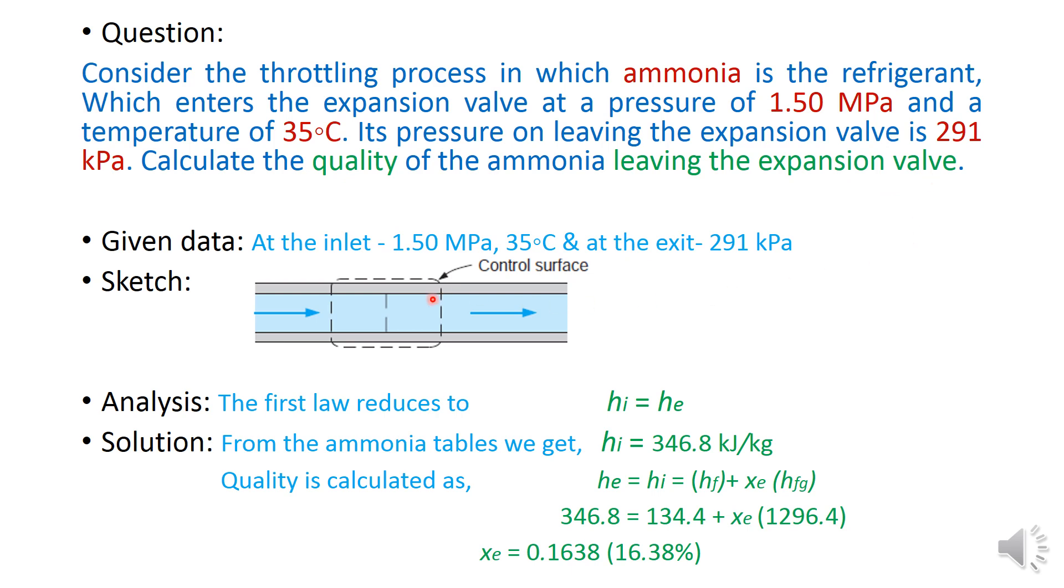Now just for understanding I have taken the sketch in a most simple way. Given data I have written here that at the inlet I have 1.5 MPa and 35 degrees Celsius. That is entering here. Ammonia is entering here. At the exit the pressure of ammonia is 291 kPa. So this is the exit. So this is called the throttling device or the throttling effect.